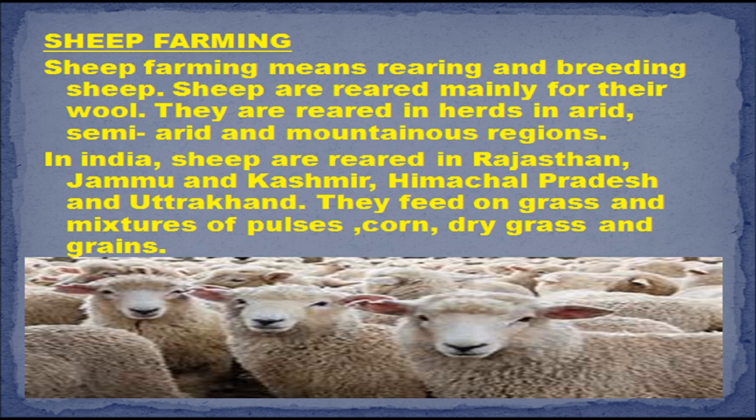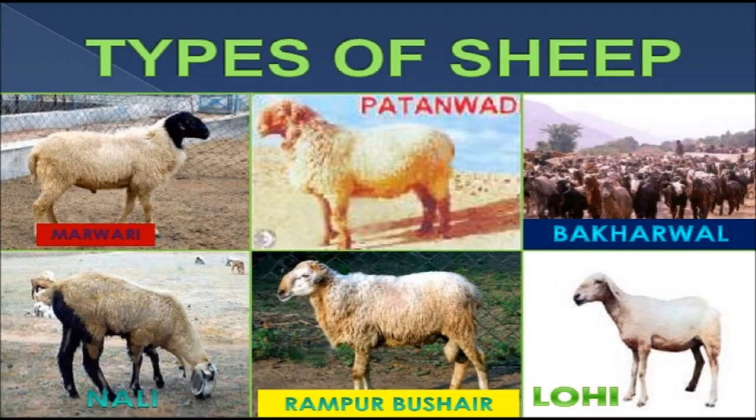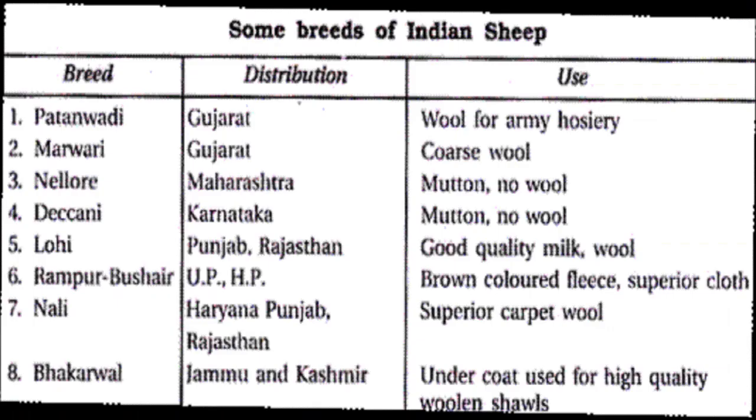Sheep are also fed a mixture of pulses, corn, dry grass and grains. Common breeds of Indian sheep are Lohi, Rarbushair, Nali, Bakharwal, Marwadi and Pathanwadi.